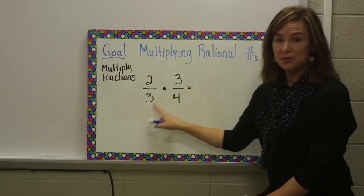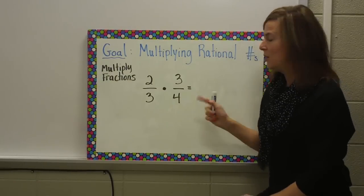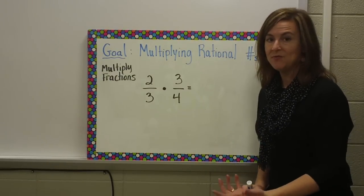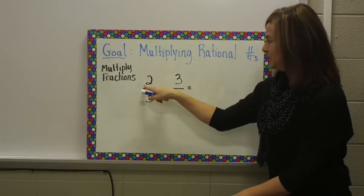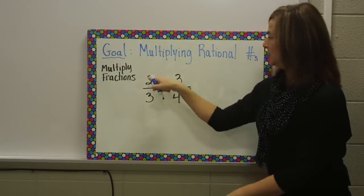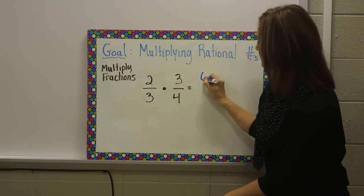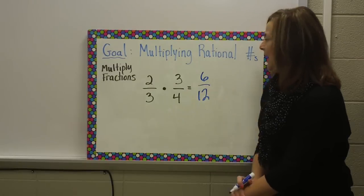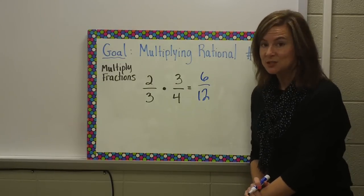Here we have two-thirds times three-fourths. To multiply rational numbers, you might remember from previous years, all you need to do is multiply the numerators. Two times three is six. Three times four is twelve. And you end up with six twelfths.